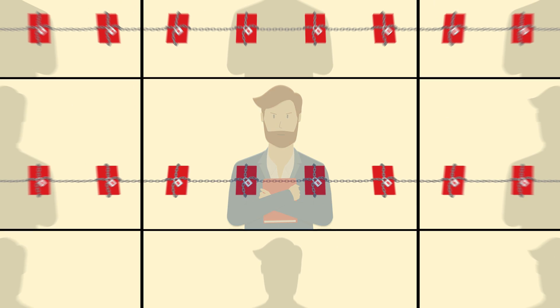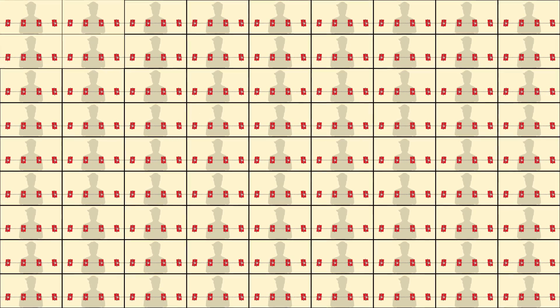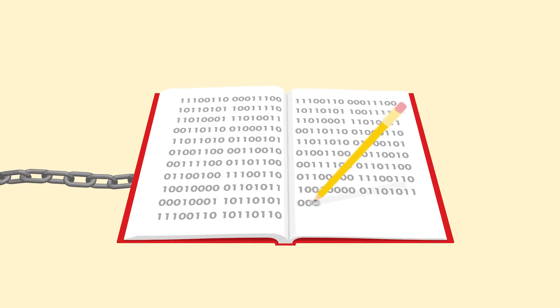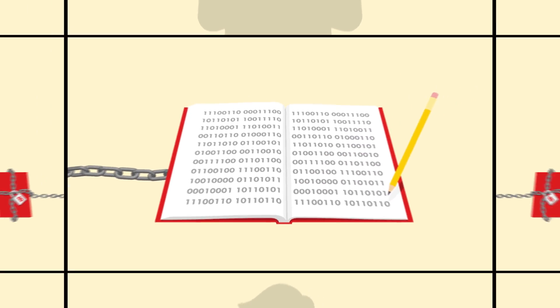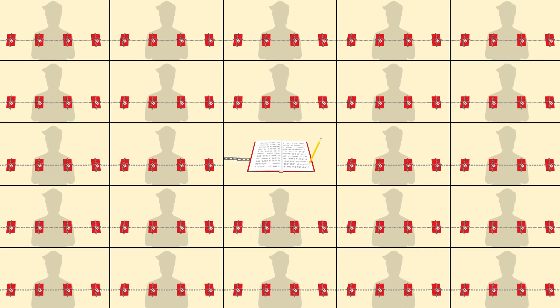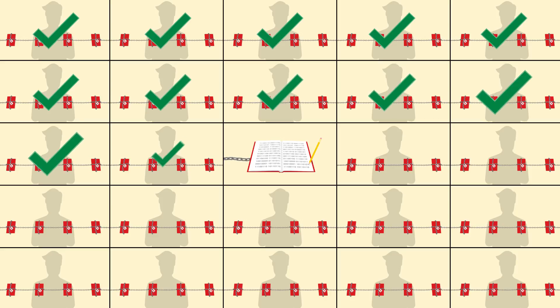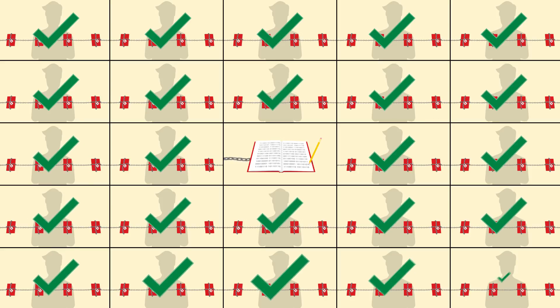They are a distributed ledger, which means they are held across a whole network of computers. No one person can add to the chain without the approval of every other blockchain host. When a new record is added, every participant must verify the input before it is accepted. This is known as the consensus protocol. Once the record has been added to the blockchain, every participant gets a full copy.